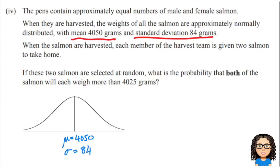Now I'm going to read the rest of the question. When the salmon are harvested each member is given two salmon to take home. As soon as I see this, and this is an idea I've seen before in previous exams, I want you guys to learn to recognize finding two events. That's talking about person number one is getting a salmon and person number two is getting a salmon. Remember, and in probability terms means to multiply. Then the question says if these two salmon are selected at random, what's the probability that both of the salmon will each weigh more than 4025 grams.